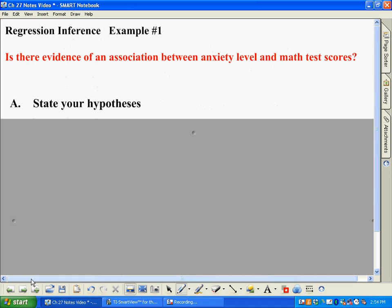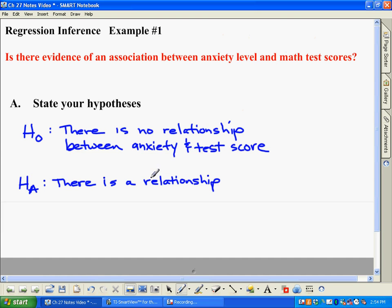And what that test is called, we'll get to that in a second here, but it's called a regression slope t-test where we're looking at the slope here. So the question is, is there evidence of an association between anxiety level and math test scores? So, with that in mind, we're going to have our hypotheses like normal, and we have our null hypothesis would be that there is no relationship between the two variables. Anxiety and test score have nothing to do with each other. And the alternate would be, yes, there is a relationship.